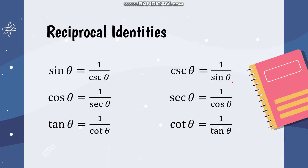Now since we're talking about identities, this concept is also present with trigonometric identities. When we say identity, any value you substitute for the variable will always be true on both sides. In trigonometry, we have trigonometric identities, meaning these expressions are always equal for any value of theta.